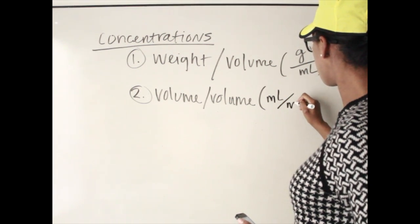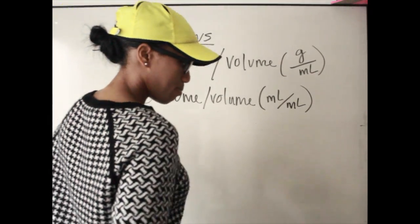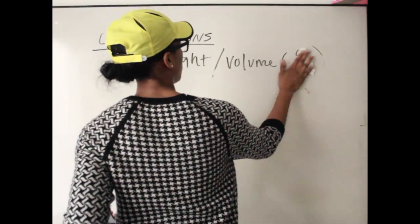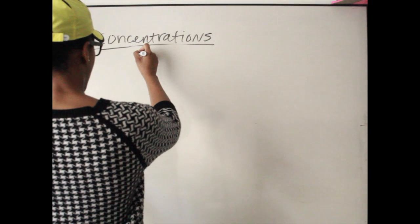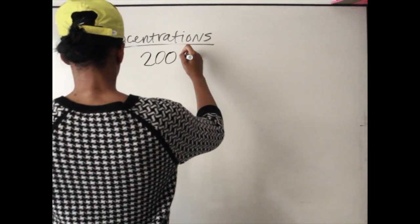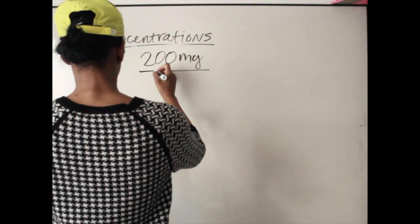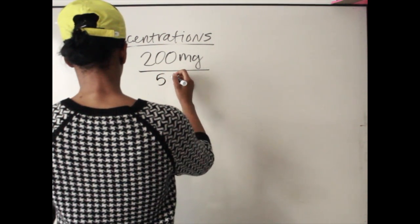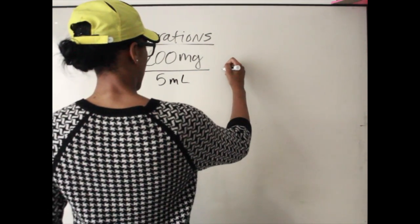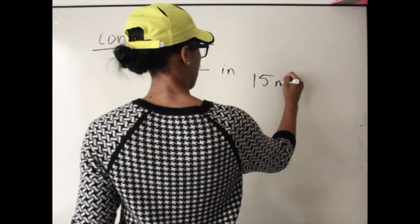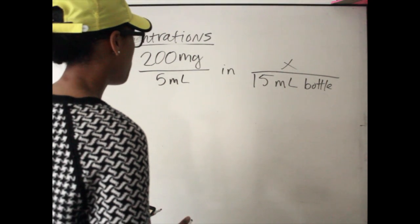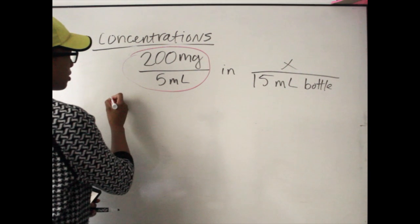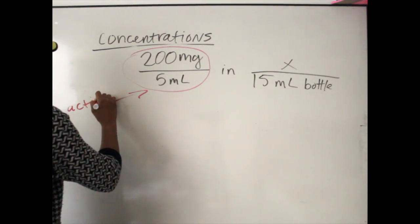As an example of a concentration, let's say we have azithromycin — 200 milligrams over 5 mL in a 15 mL bottle. So basically the active amount — 200 mg per 5 mL — is the active amount of azithromycin that's in this 15 mL bottle.